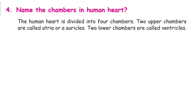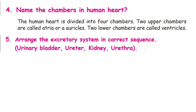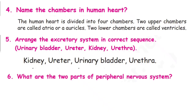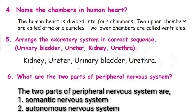Question number 5: Arrange the excretory system in correct sequence — urinary bladder, ureter, kidney, urethra. The correct sequence is: kidney, ureter, urinary bladder, urethra. Question number 6: What are the two parts of the peripheral nervous system? The two parts are the somatic nervous system and the autonomic nervous system.